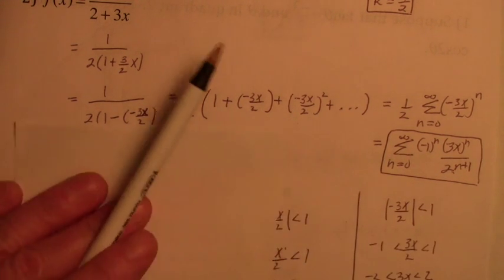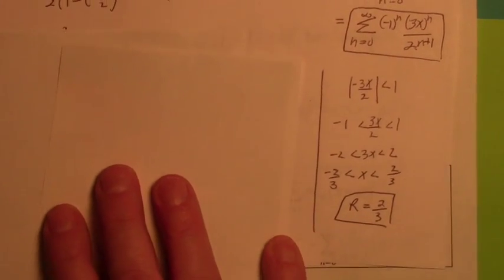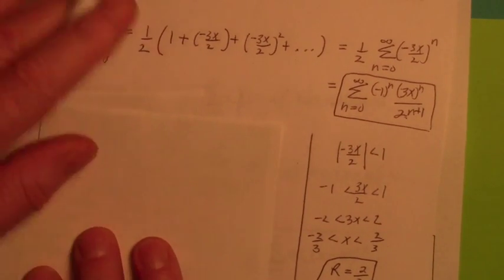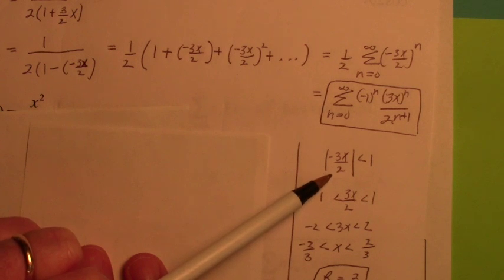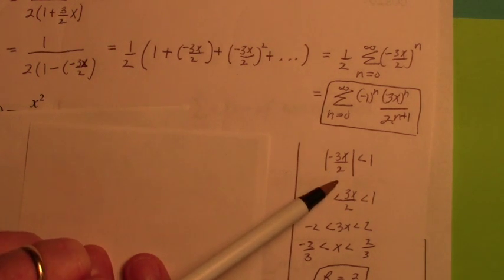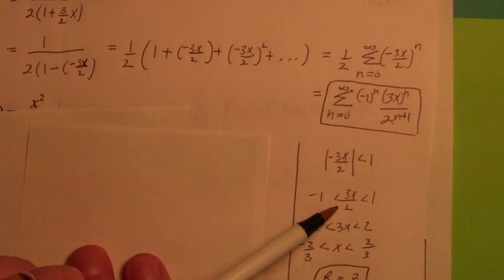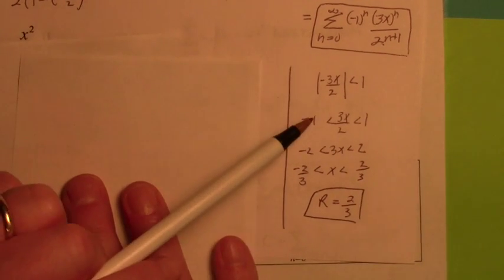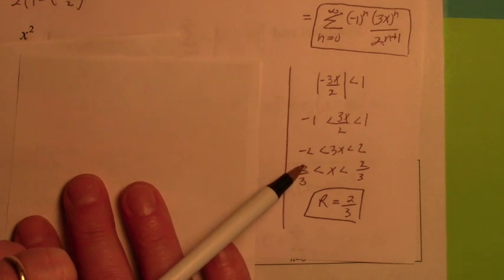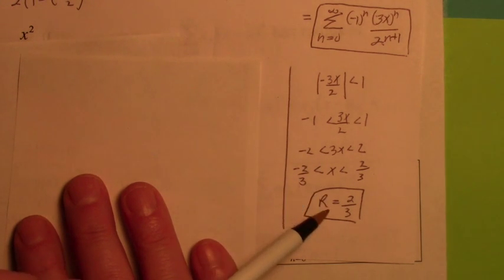What is the radius of convergence on that one? The absolute value of negative 3x over 2 has to be less than 1. So you break that between negative 1 and 1 — that's how you solve an absolute value inequality. Multiply by 2 and divide by 3. So the interval goes from there to there, and r would be half that interval, which would be two thirds.